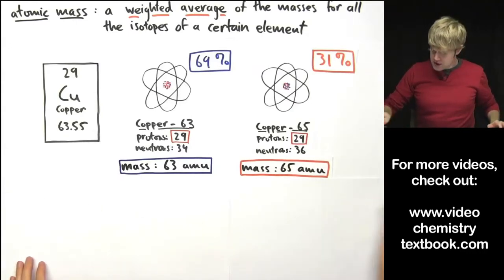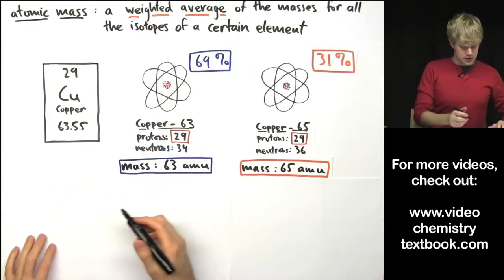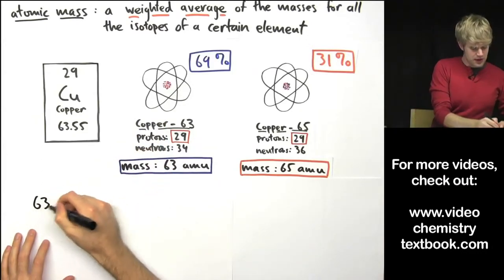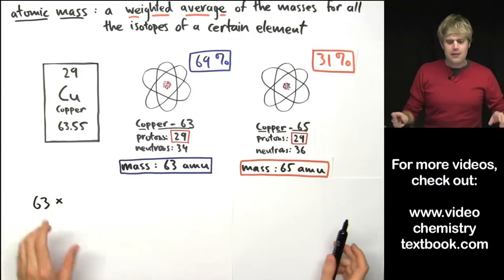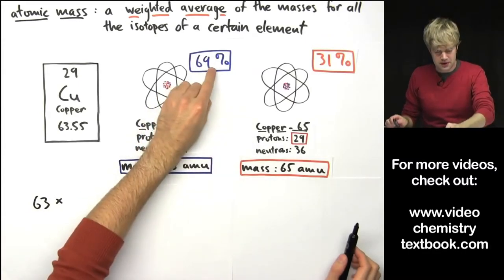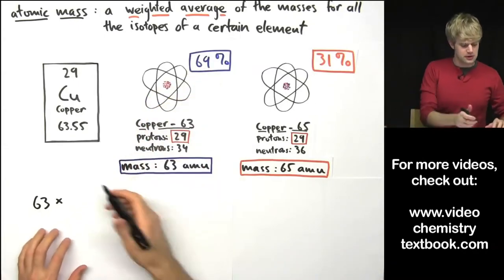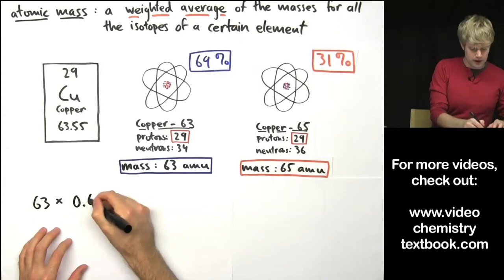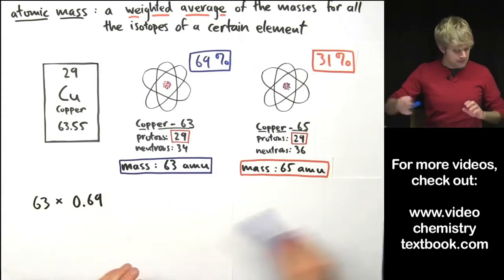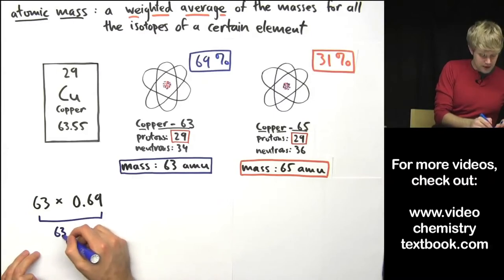What we do is we start with the mass. So, copper-63, I'll do 63 AMU. Now I multiply that by its abundance expressed as a decimal, 69%, move the decimal place two spots to the left and I have 0.69. And this expression right here is for copper-63.